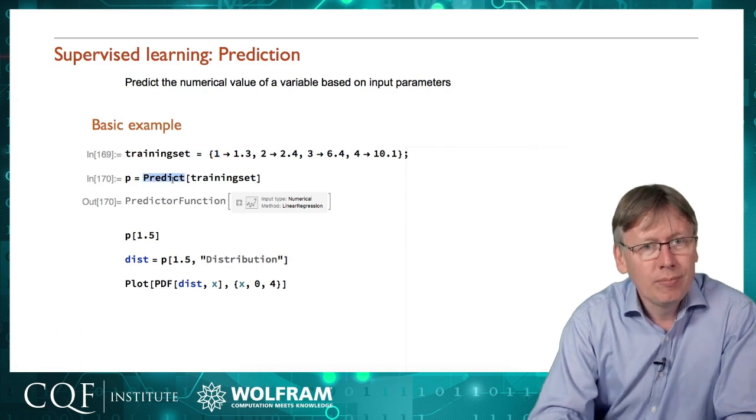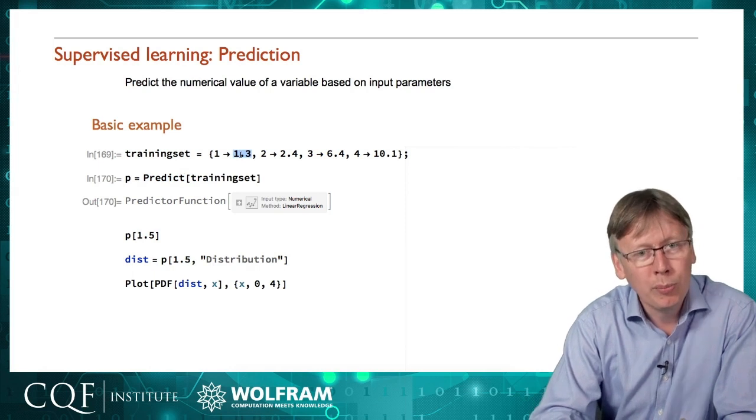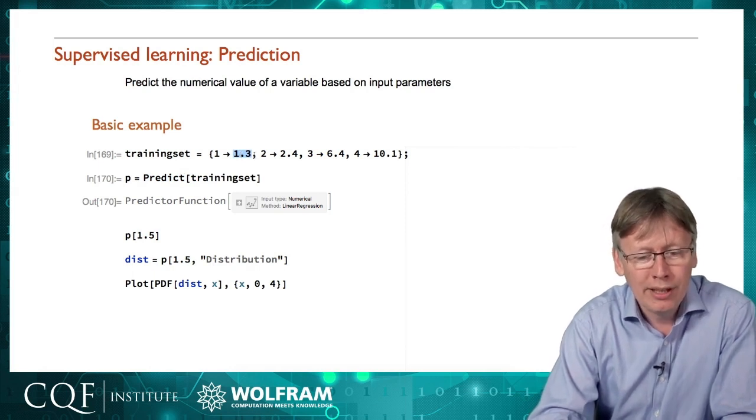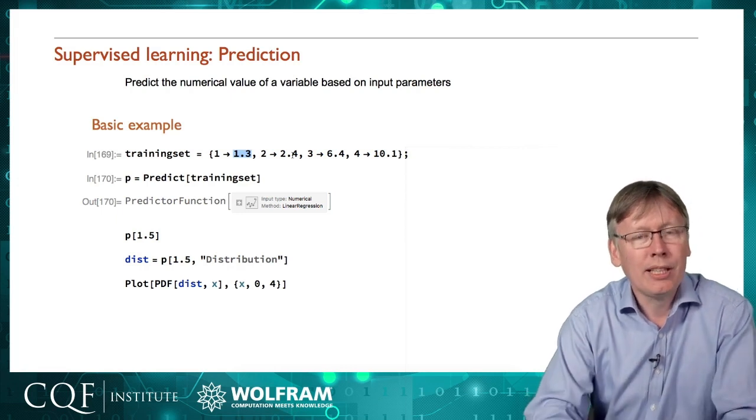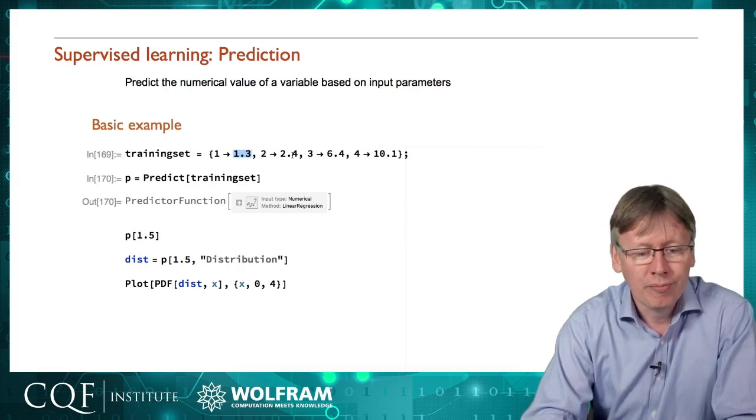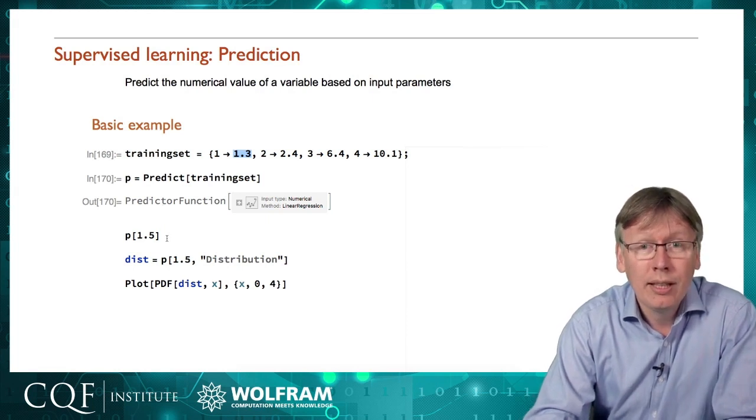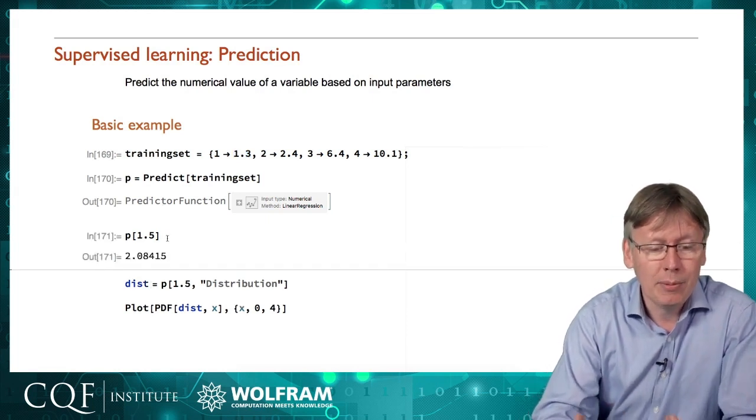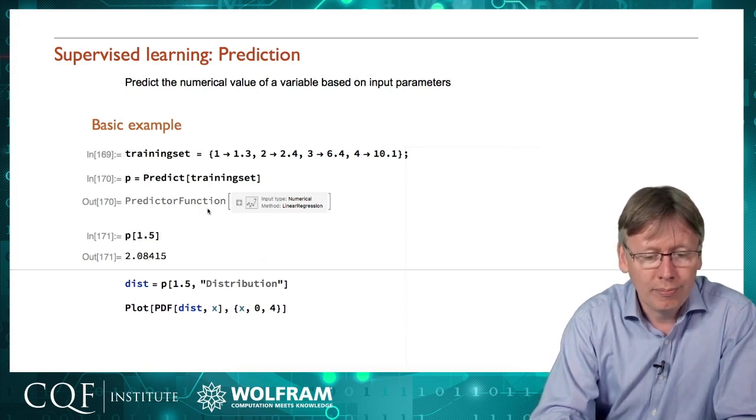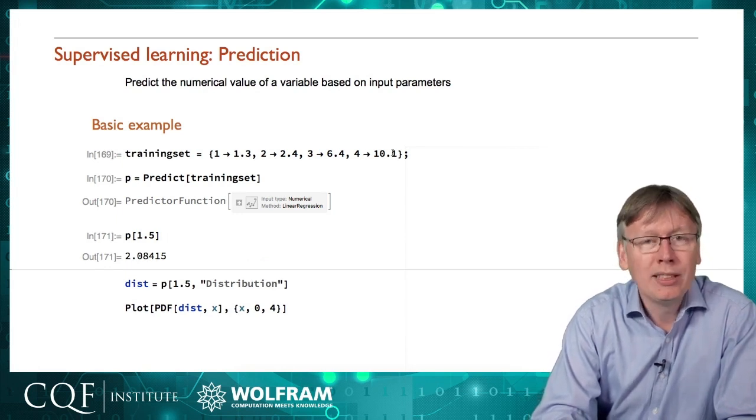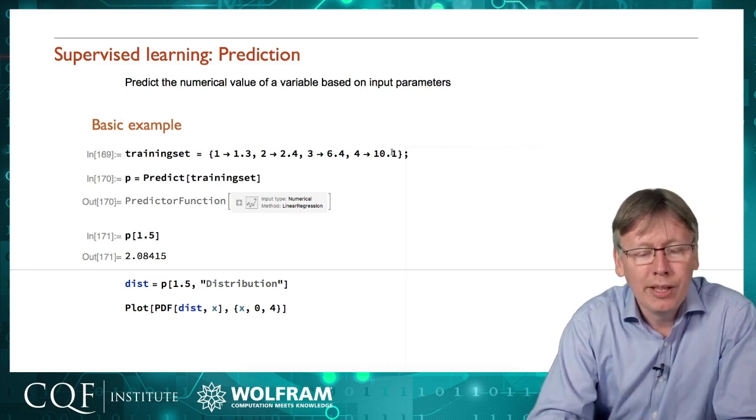We call predict to make it clear that we're after a numerical prediction. This isn't a class called 1.3, but actually it's a number that is just a little bit different from 2.4, not a completely discrete different group. We get a predictor function out that works just like our classifier function. It can be any number above, below or in between the examples.